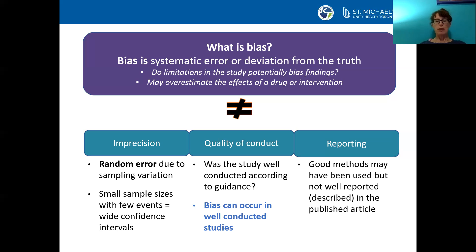Similarly, not all methodological flaws are relevant to bias. For example, failure to perform a sample size calculation or to obtain ethical approval are important markers of study quality, but they're unlikely to bias study results. Bias is also not the same as the quality of reporting. Studies rarely report the methods used in great detail, and studies may have used rigorous methods even if they're not described well in the published paper.